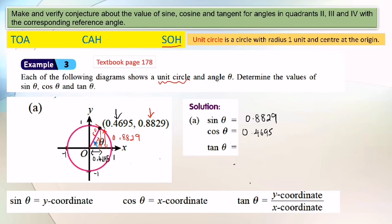How about tangent theta? If based on the diagram, tangent theta equals opposite over adjacent. So opposite side is 0.8829 and adjacent side is 0.4695.